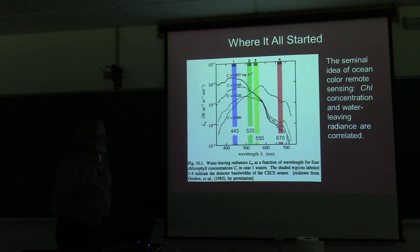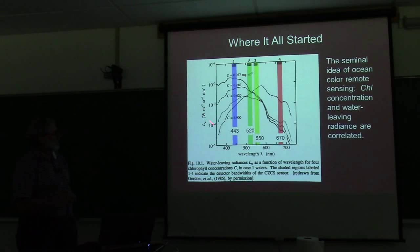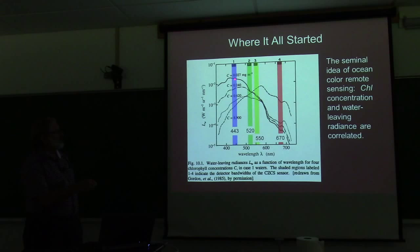Ken showed you this curve — some measured spectra of water-leaving radiance as a function of chlorophyll. People looked at this and said, well, if we measure the blue wavelength, there's a lot of variability depending on chlorophyll, but not much variability in the green. So if we take a ratio of blue to green, we might be able to correlate that with the chlorophyll concentration.